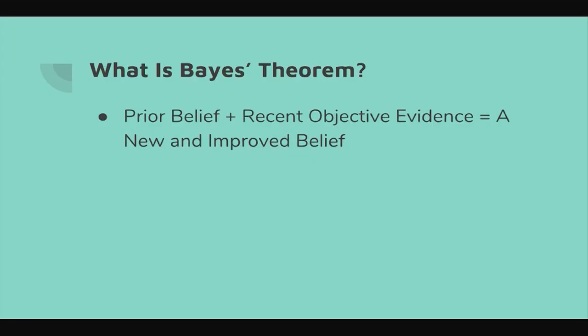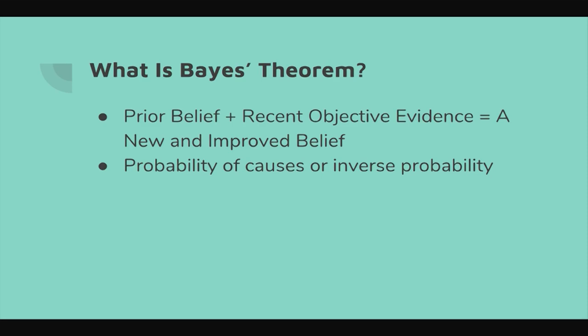So what is Bayes' theorem? At the bare-bones level, it takes our prior beliefs, adds some recent objective evidence or data, and allows us to come to a new and improved belief about the world based on those two things. Sometimes it's called the probability of causes, or inverse probability, because with Bayes' theorem we're often trying to go back to the original cause of some situation — for example, given a particular set of symptoms, figuring out what disease originally caused them.